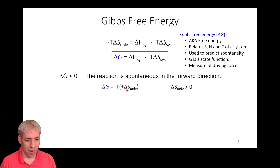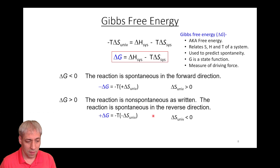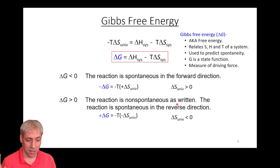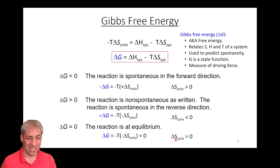Much like delta S universe, we can predict whether a reaction is spontaneous based on the sign of delta G. Since delta G equals negative T times delta S universe: if delta G is negative, delta S universe is positive and the reaction is spontaneous in the forward direction. If delta G is positive, the reaction is non-spontaneous as written but spontaneous in reverse. If delta G equals zero, the reaction is at equilibrium.